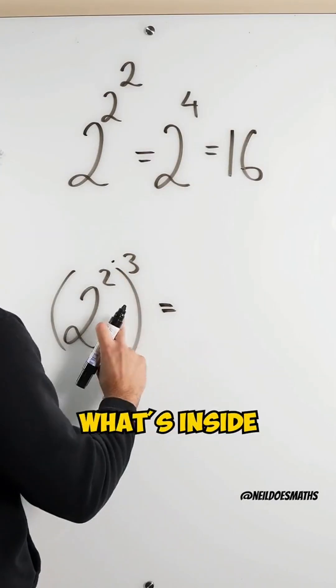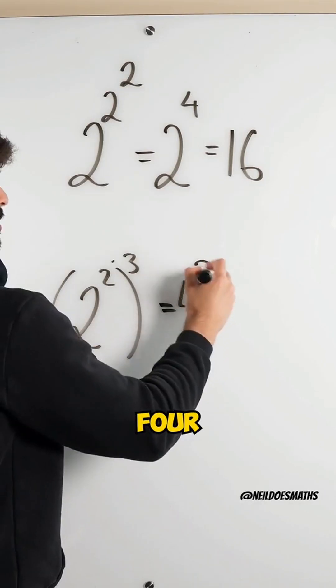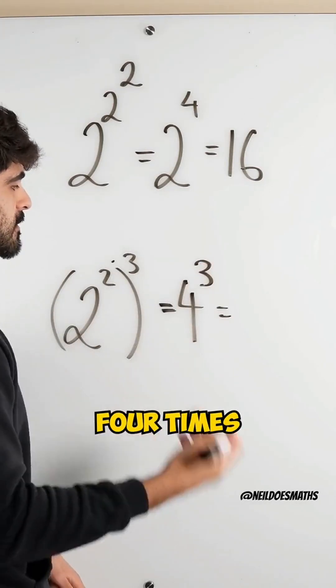A lot of people would address what's inside the bracket first, which is four cubed. Four cubed is four times four times four, which is 64.